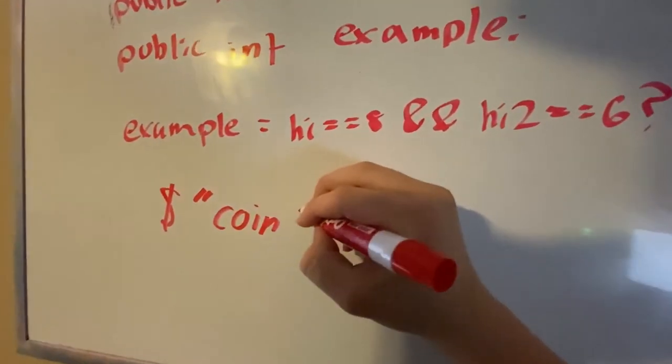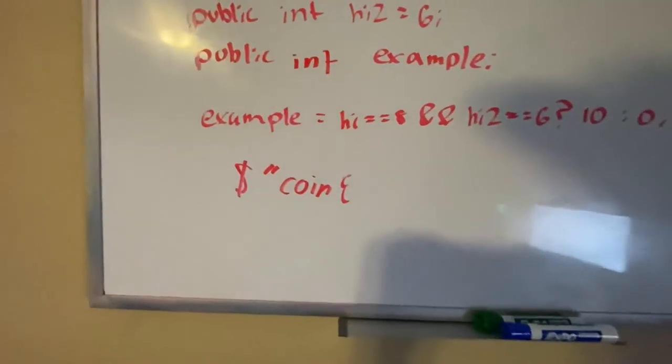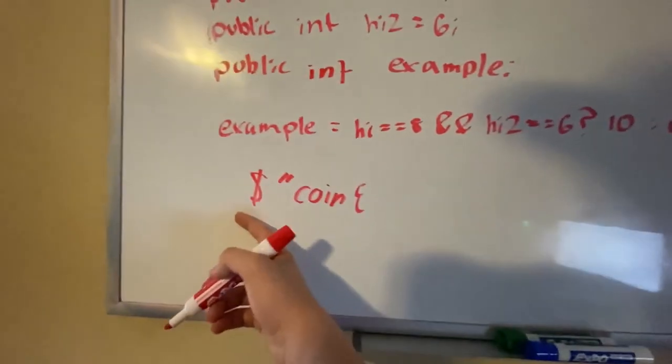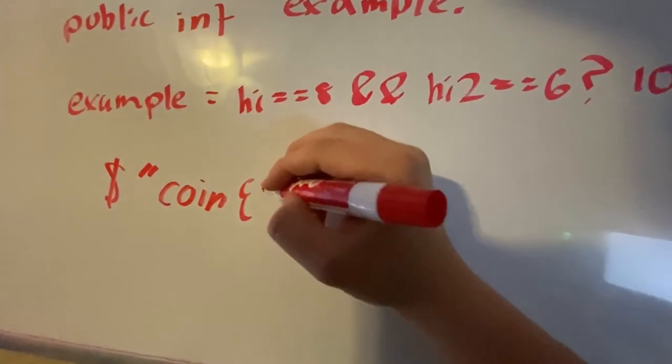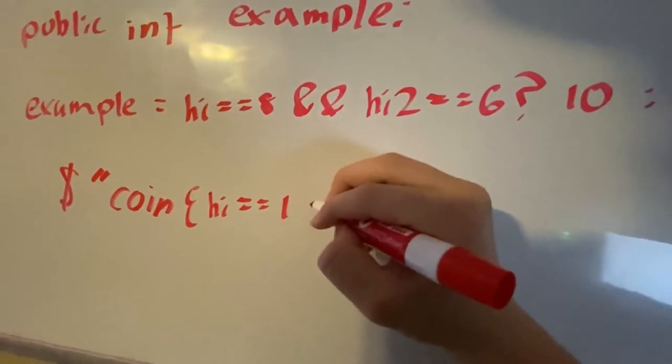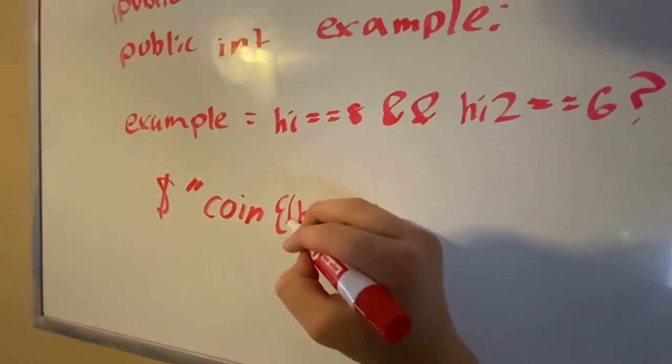So what we can do here in our string, again we're putting variables inside the string by using the curly braces and adding the dollar sign. What we can do here is if high is equal to one, also in here we need to have parentheses.